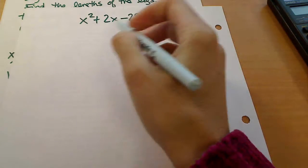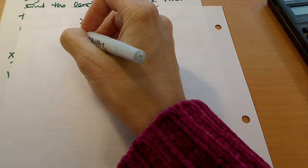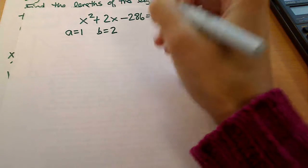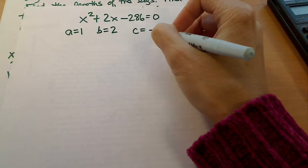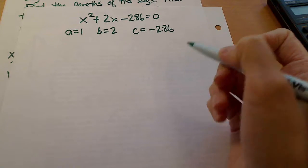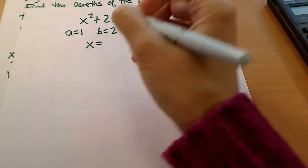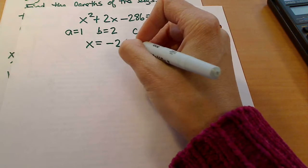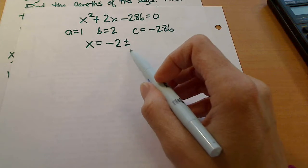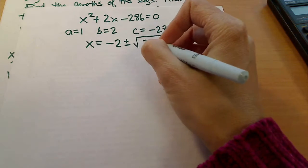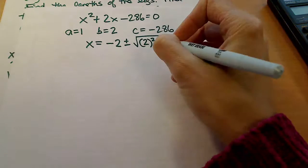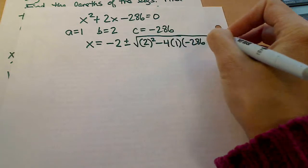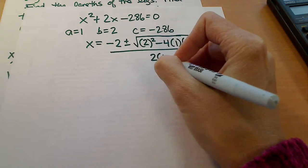Using the quadratic formula, the a, which is the coefficient of x squared, is 1. The b here is 2, and the c would be negative 286. So plugging that in, we have x equals the opposite of b, so negative 2. Remember the quadratic formula is negative b plus or minus the square root of b squared minus 4 times a times c, and that's all over 2 times a.